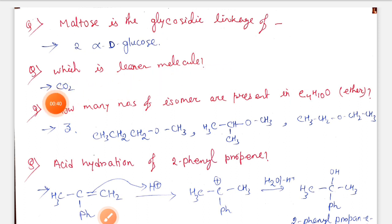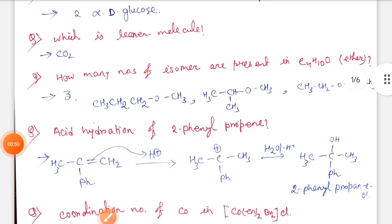Next, which is a linear molecule? Here four options are given but I can't remember all the answers. The right option is CO2. How many numbers of isomers are present in C4H10O ether? This is the molecular formula of an ether. The answer is 3.